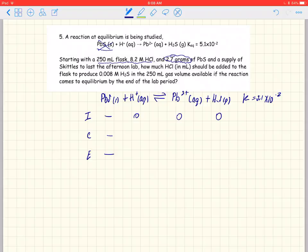All we know is that we add some amount of H+ to this reaction to cause this reaction to shift to the right and produce H2S. So it's going to be 0.008 molar hydrogen sulfide.